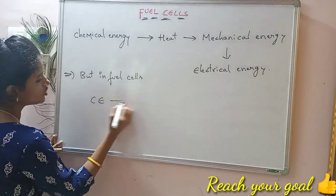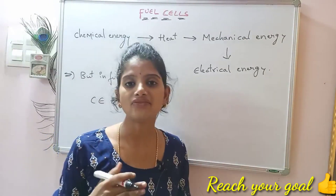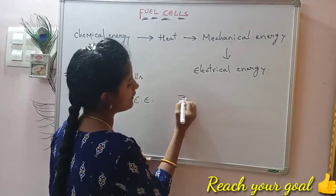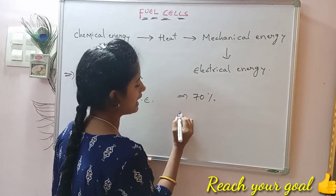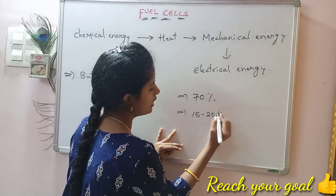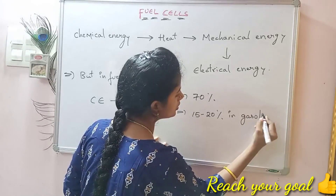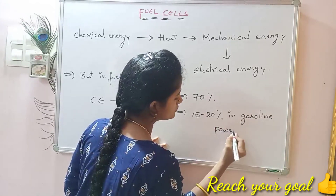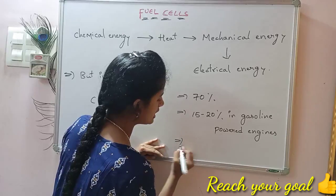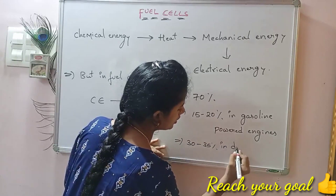The efficiency of conventional fuel cells approaches 70%. In comparison, gasoline power engines are only 15 to 20% efficient, and diesel engines are around 30% efficient.